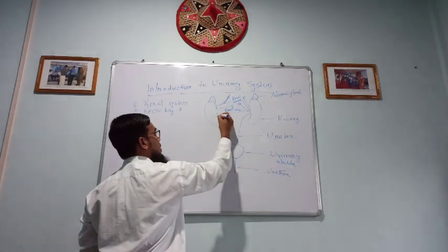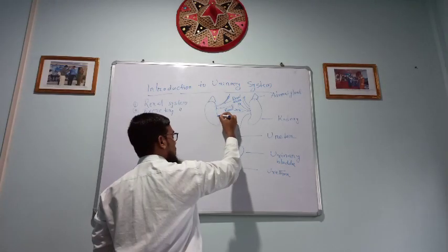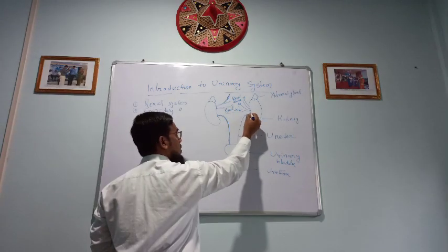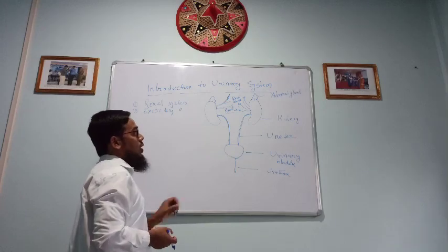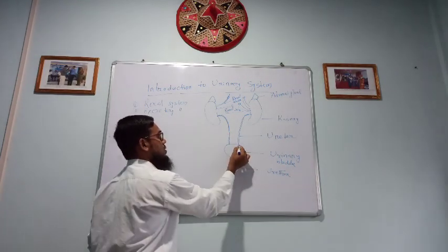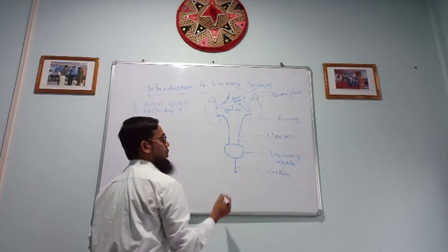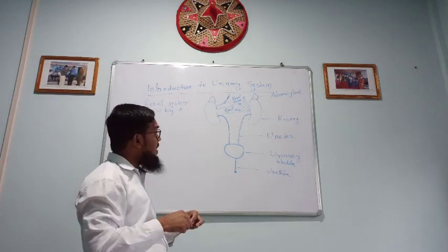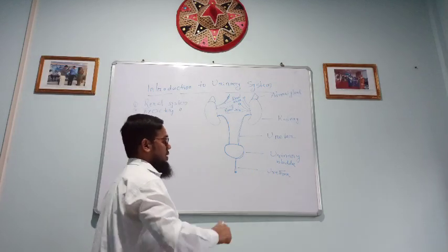And then all the whatever the urine forms in this kidney by its functional unit called nephron, so this all urine brings to the urinary bladder through two tubes which are called ureter. And that urine is stored in urinary bladder and the opening is called urethra. So now we will discuss briefly what things are these.